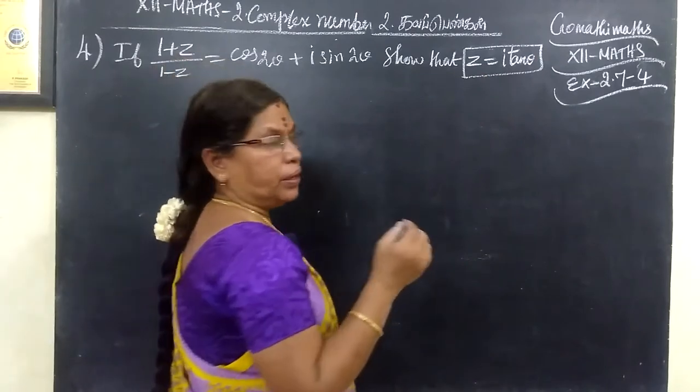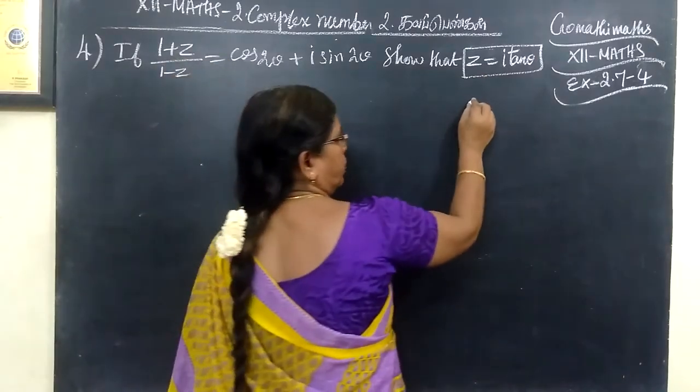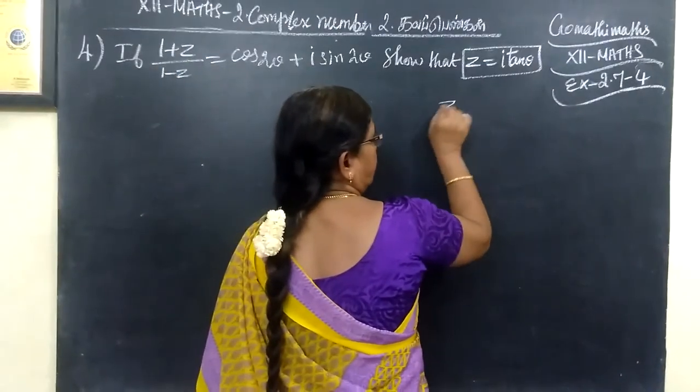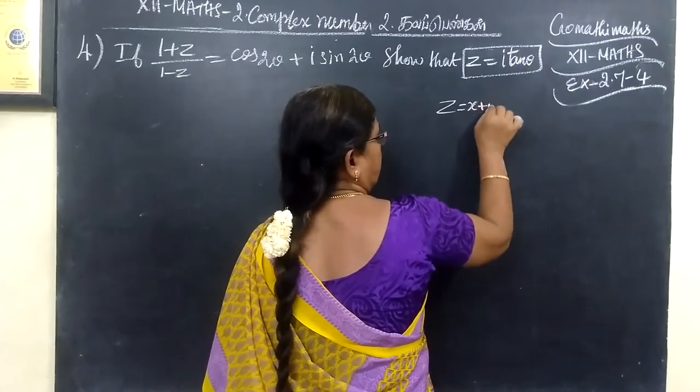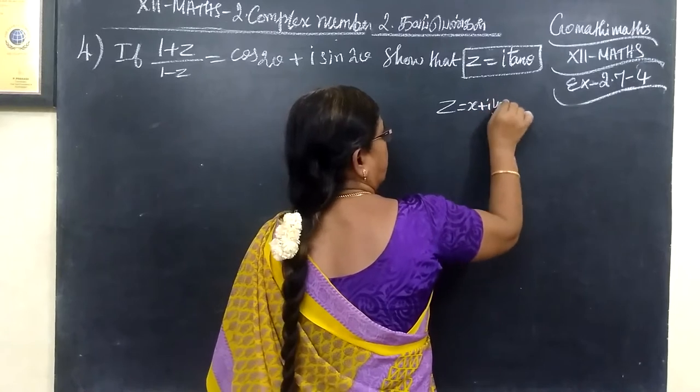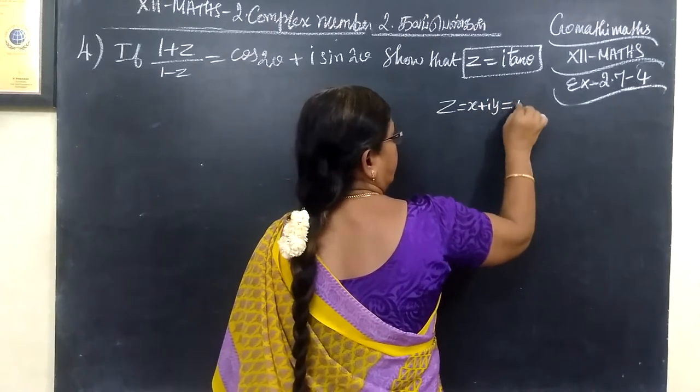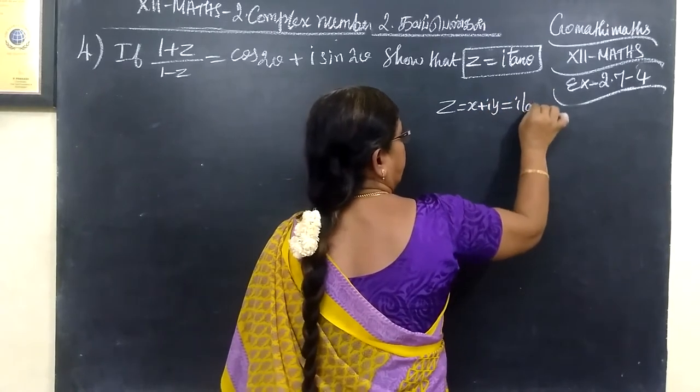z equals x plus iy. The answer is i tan θ.